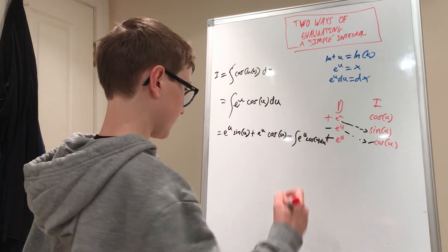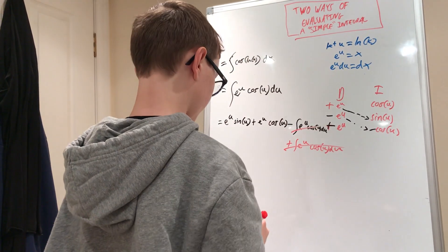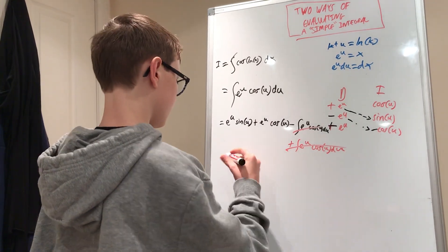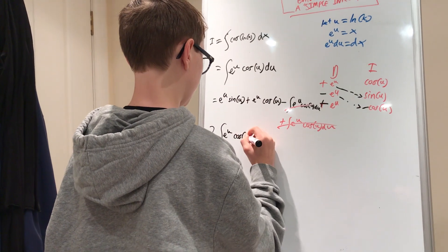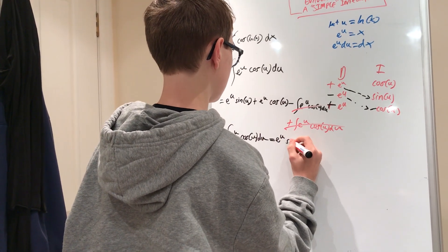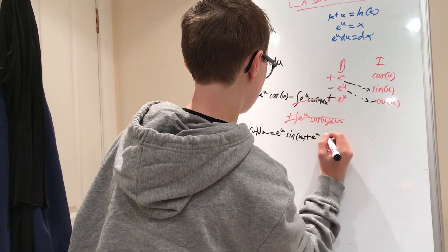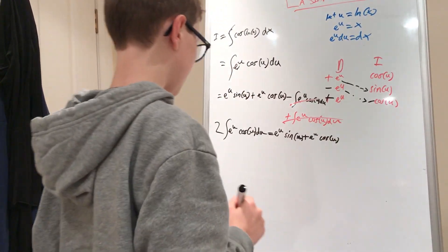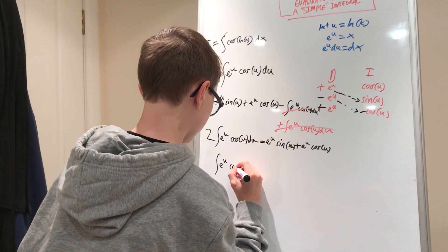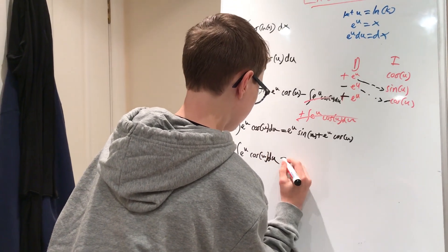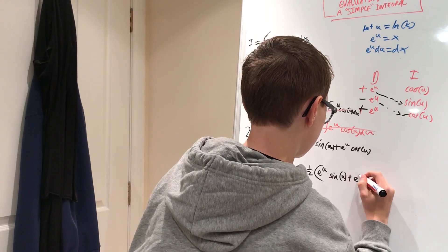So we add that integral to both sides, which means those two cancel, leaving us with two times the integral of e to the u cosine u du equal to e to the u sine u plus e to the u cosine u. Multiplying both sides by one half — the half and two cancel — we get the integral equals one half times e to the u times (sine u plus cosine u).